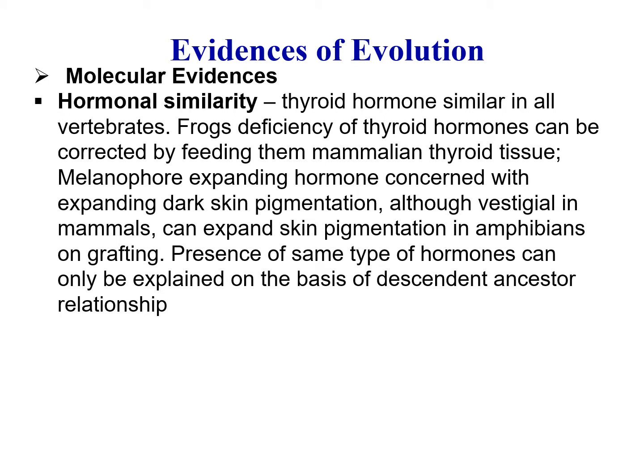There is also hormonal similarity. For example, thyroid hormone is similar in all vertebrates. Deficiency of thyroid hormone in frogs can be corrected by feeding them mammalian thyroid tissue, indicating their common ancestry. Similarly, the melanophore-expanding hormone, concerned with expanding dark skin pigmentation, although vestigial in mammals, can expand skin pigmentation in amphibians on grafting. The presence of the same type of hormone can only be explained on the basis of ancestor-descendant relationship.